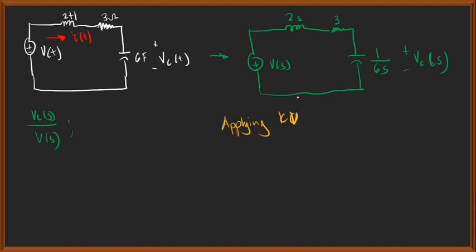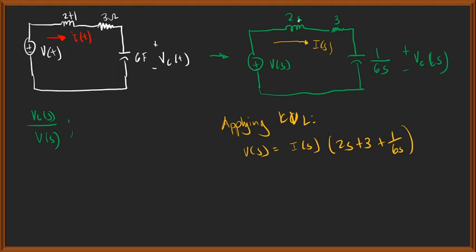Applying KVL: V(s) = I(s)·(2s + 3 + 1/(6s)). Note that the impedances 2s, 3, and 1/(6s) are valid because we assume all initial conditions are equal to zero. That is the main purpose of the transfer function — assuming all initial conditions equal zero.